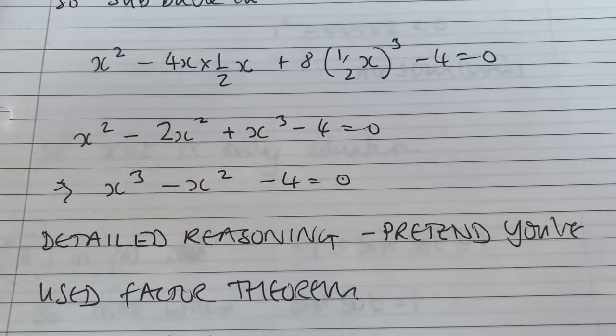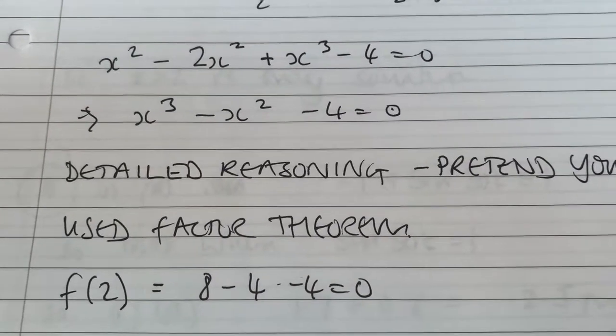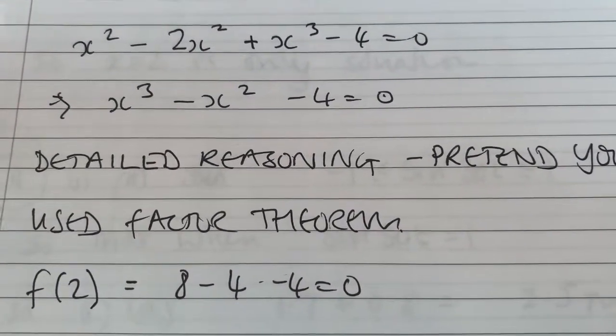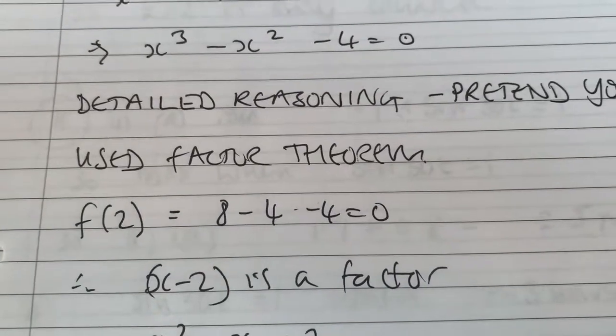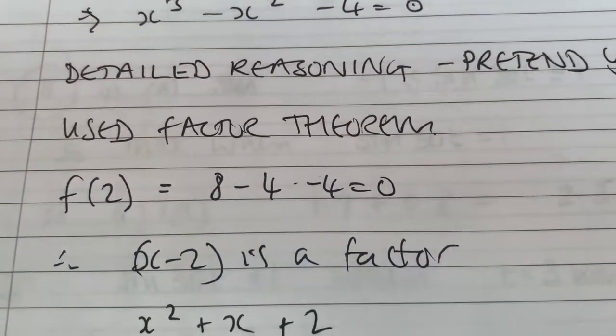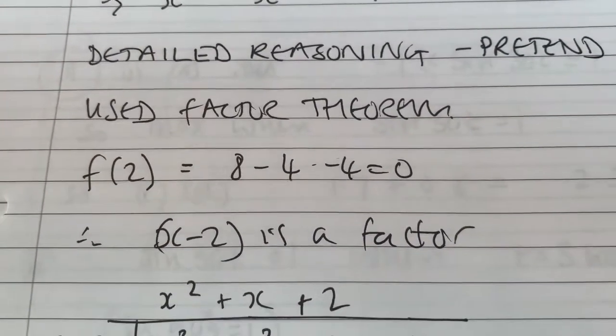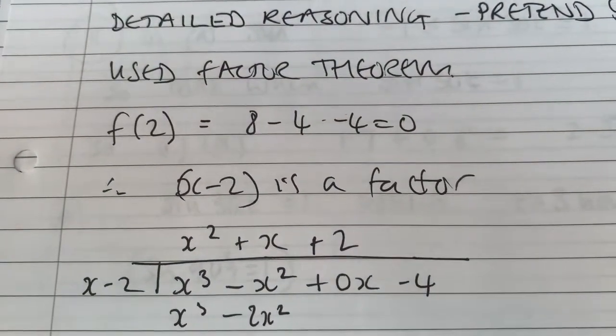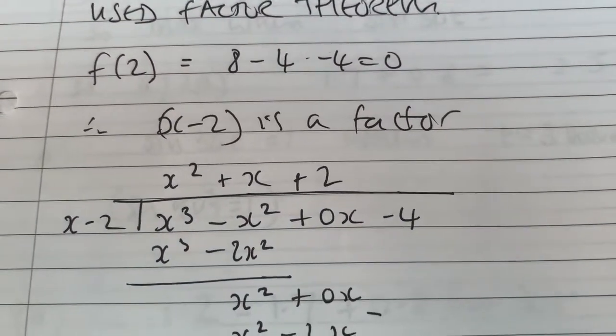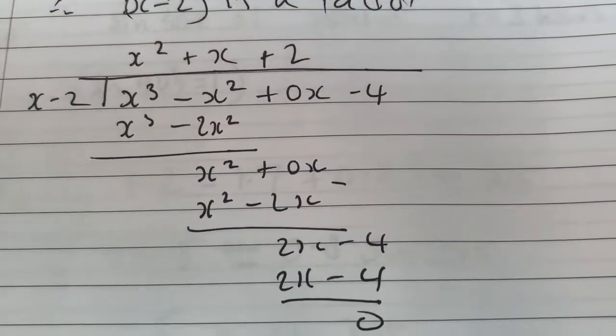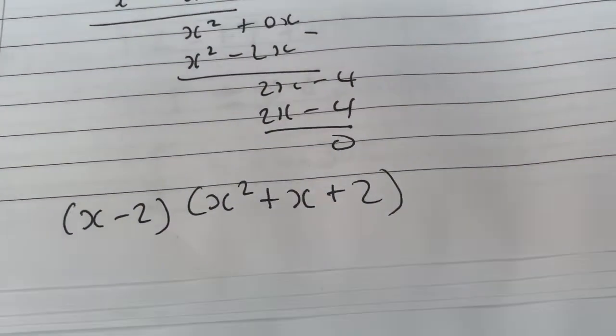You're now going to use that and pretend you've got it from the factor theorem. That is because the question says show detailed reasoning. So write down your inspired choice of f of 2. You know that if f of 2 equals 0, then it must be a solution. So show that f of 2 equals 0. So x - 2 is a factor. If x - 2 is a factor, you then, again, I'm afraid because it says show detailed reasoning, I'm going to do polynomial division to be on the safe side. I divide my x³ - x² - 4 by x - 2 and I end up with x² + x + 2. So you can see I've done polynomial division there. So that means I can write my cubic like that. I still haven't answered the question though.